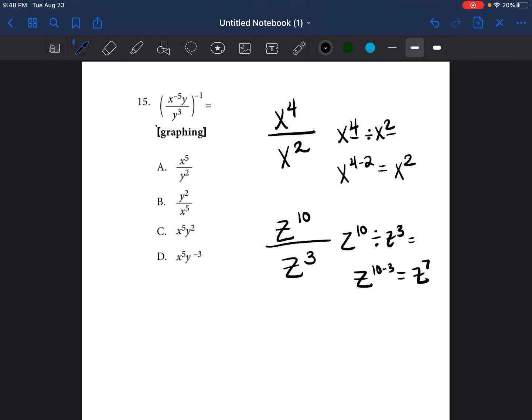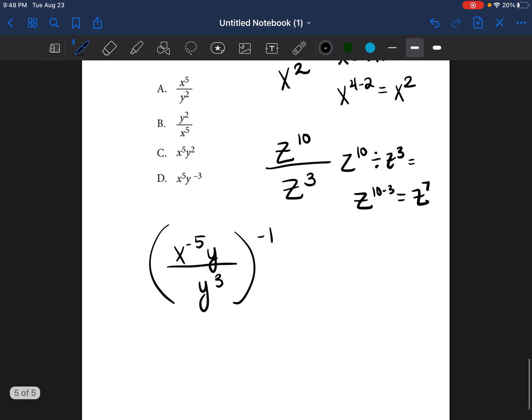So if we go ahead and take this problem, x to the negative fifth power y over y to the third power to the negative one, let's go ahead and do some dividing. We first start with the x. There is no x on the bottom, so we just leave it as is, x to the negative fifth power.